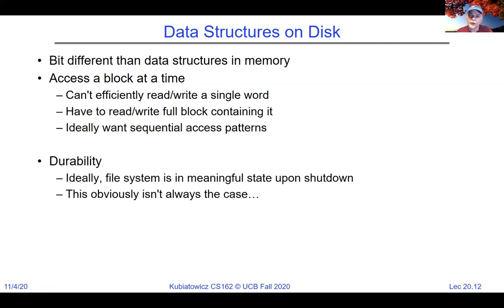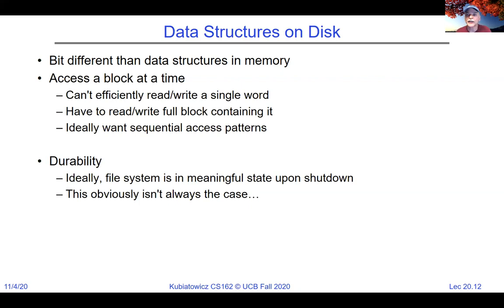When writing to disk, if the system crashes mid-way, the on-disk data structures may be left in an inconsistent state. Next time we'll talk about journaling and other techniques for ensuring data is never lost even with sudden shutdowns.